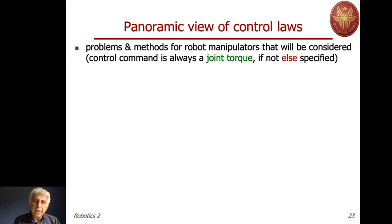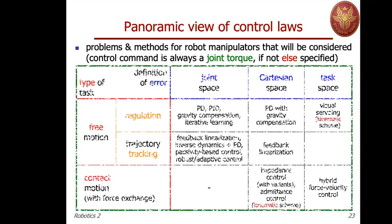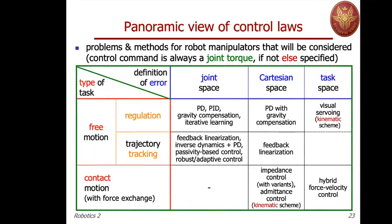With this in mind, let me come slowly to a conclusion of this lecture, giving a panoramic view of all the control roles that we will look at. In all these methods, we will assume that the control command is a joint torque or, equivalently, a desired current sent to the motors in the case of electrical motors. In the following lectures we will address a number of problems and give solutions for each of them.